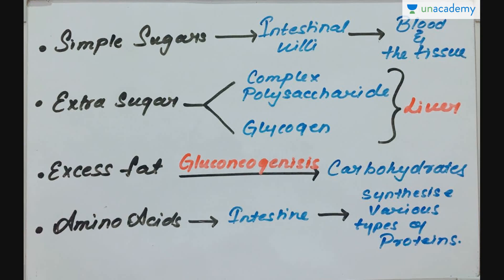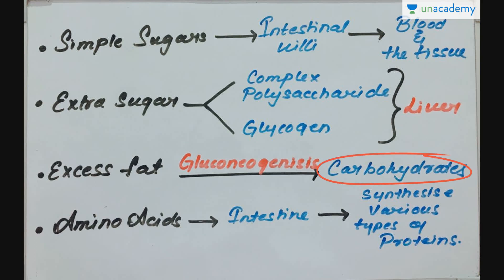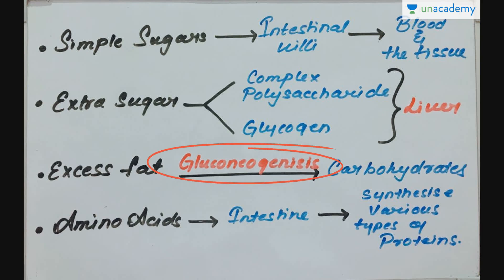The simple sugars absorbed through the intestinal villi will reach the blood and tissues. Excess sugars are converted into complex polysaccharides and glycogen in the liver. The stored glycogen is utilized during conditions of stress. Excess fat can also be converted into carbohydrates by the process of gluconeogenesis. The amino acids absorbed from the intestine are utilized to synthesize various types of proteins in the body.